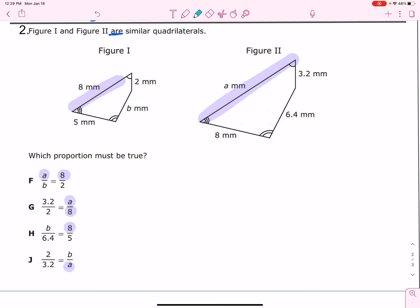Then I'm going to look at my shortest side. Shortest side, 2 and 3.2. So, 2, 2, 3.2, 3, 3.2, 2, 3.2. Okay.